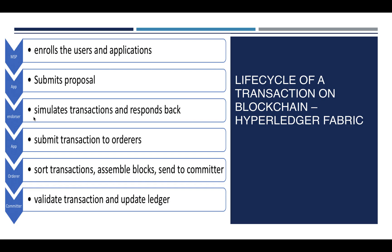We will get into the different types of peers in the coming lectures. For now, there is a unique type of peer which has chain code installed on it — these are the endorsing peers. The application submits transaction proposals to those endorsing peers, which simulate the transactions and respond back to the application. The application then submits the transaction to the orderer, which sorts the transaction, assembles a block, and sends it to the committing peer. The committing peer validates the transaction and updates the ledger.